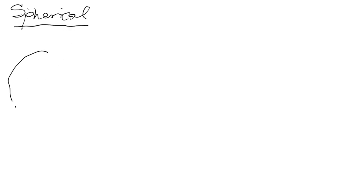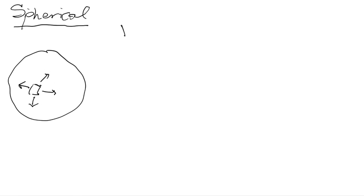The first is a spherical pressure vessel. You have some perfect sphere and we're going to be looking at a stress element. The inside of the pressure vessel is pressurized with what's called gauge pressure. Gauge pressure is the difference between the pressure inside an object and atmospheric pressure, and we assume it's always positive — so the pressure inside is higher than atmospheric pressure.